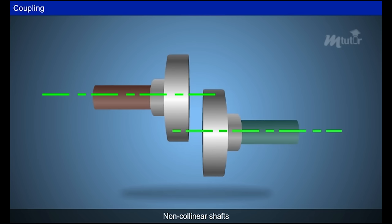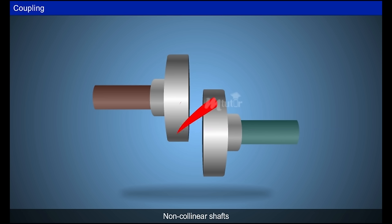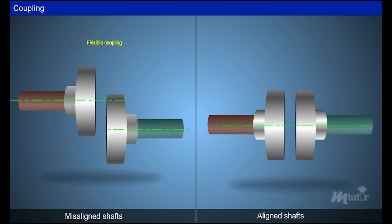But in non-collinear shafts, the axis of both shafts do not meet at the same line. In such cases, rigid couplings are not suited. In order to allow this misalignment, flexible couplings are used. Accordingly, flexible couplings are used for misaligned shafts, whereas rigid couplings are used for perfectly aligned shafts.